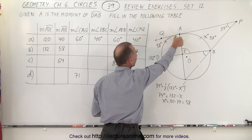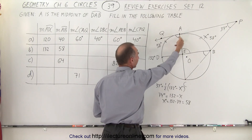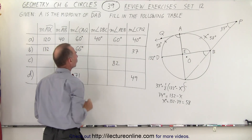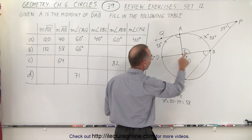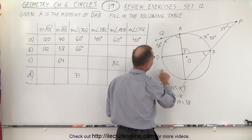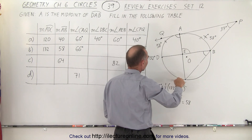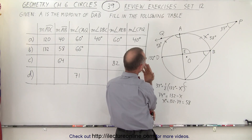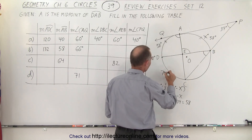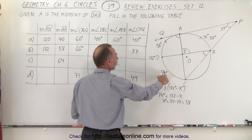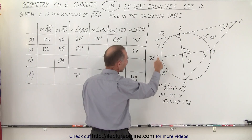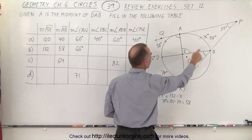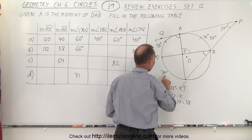So angle CAQ — that's this angle right here — and this measure, the total measure, is 132. That would be half of that, or 66 degrees. For the measure D to B to C — that's this angle right here — we know the total arc is 132 and this portion is 58, so subtract 58 from 132 to get 74 degrees. Angle DBC would be half of 74, which is 37 degrees.